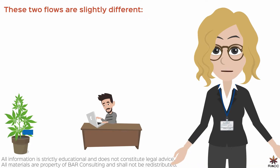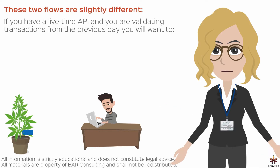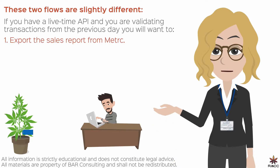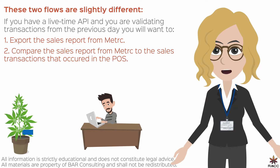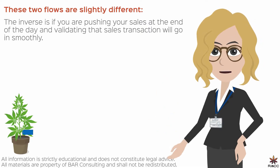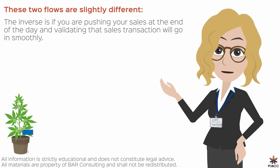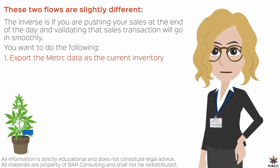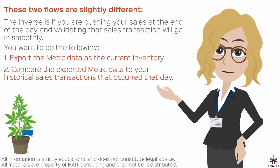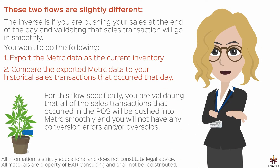These two flows are slightly different. If you have a lifetime API and you are validating the transactions from the previous day, then you will want to export the sales report from Metrc and compare that to your sales transactions that occurred within the point-of-sale. Conversely, if you are pushing your sales at the end of day, you want to export the Metrc data as the current inventory and then compare that to your historical sales transactions that occurred that day. For this flow specifically, you are validating that all of the sales transactions that occurred in the point-of-sale will be pushed into Metrc smoothly and you will not have any conversion errors and/or oversolds.